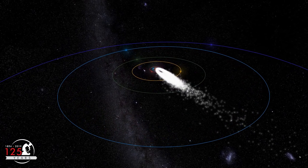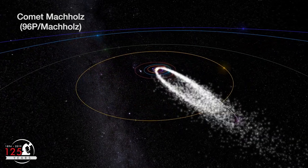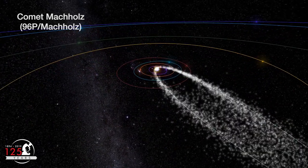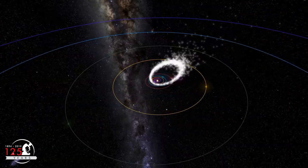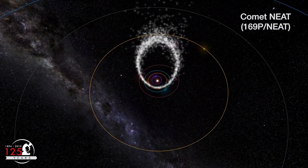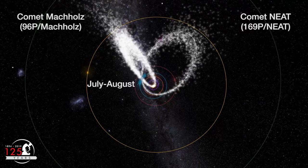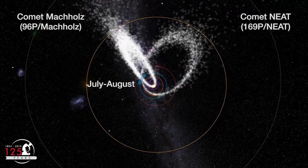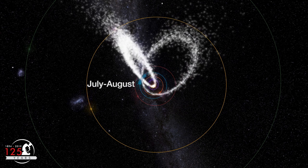The Southern Delta Aquarian meteoroid stream is thought to come from the comet Macholtz, which passes by Earth's orbit every 5.3 years and comes unusually close to the Sun. The Alpha Capricornian meteoroid stream comes from comet Neat, which passes by Earth's orbit every 4.2 years. The Earth moves through these streams in the same part of its orbit each year, so these two meteor showers are always active in our skies during July and August.